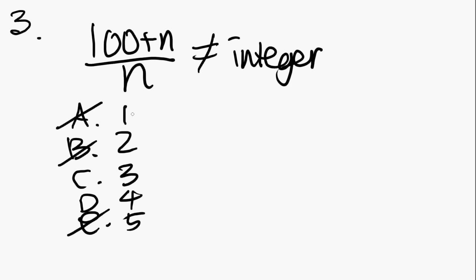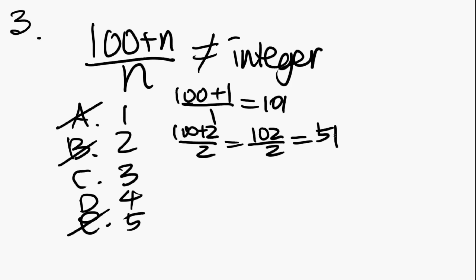1, n is on the bottom. Anything over 1 - 100 plus 1 would be 101 over 1 - that's definitely an integer. As you see more of these problems, these tricks will come second nature to you. Same with 2. 100 plus 2 is 102, an even number. Any even number can be divided by 2 and would be an integer. So 102 over 2 is 51. And 5? 100 plus 5 over 5 is 105 over 5. Any number that ends with a 5 or 0 can be divided by 5, so this is definitely not our answer.